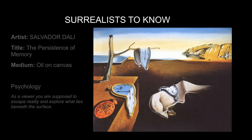Clocks lie all over the landscape, with ants crawling. Does this represent time wasted, like crumbs of cake left on a table? Does the mask represent aging, where one changes with time?